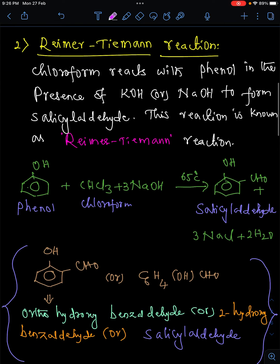Next, coming to a very important question from this chapter: Reimer-Tiemann reaction. Chloroform reacts with phenol in the presence of a strong base like KOH or NaOH to form salicylaldehyde. In this reaction, phenol is reacting with chloroform in the presence of strong base at 65 degrees Celsius, then we'll get salicylaldehyde.